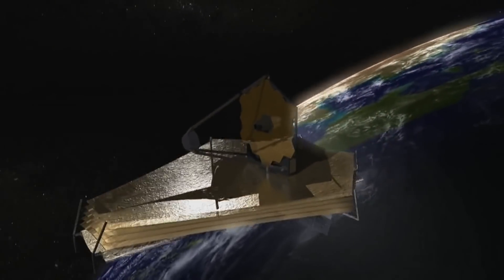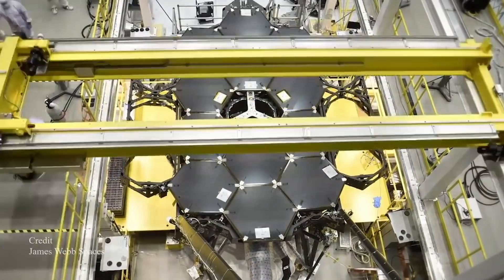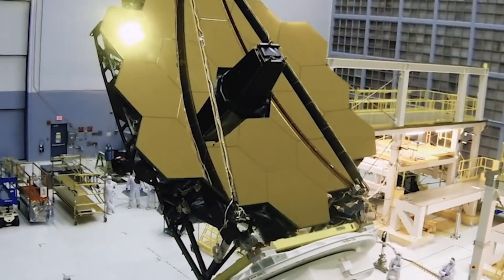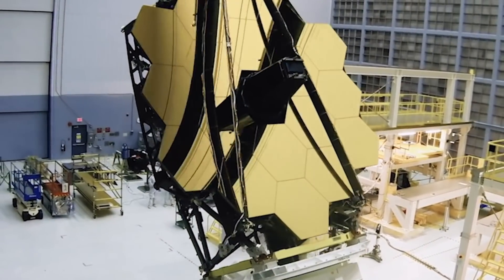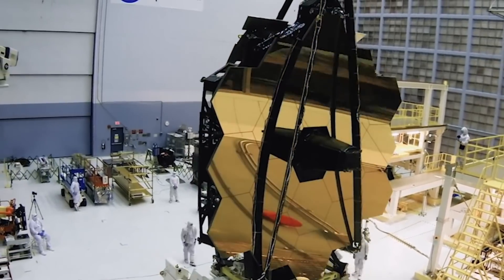This large sunshield is made of silicon-coated and aluminum-coated Kapton, which will keep the primary mirror and the telescope instruments below negative 369 degrees Fahrenheit or negative 223.2 degrees Celsius.